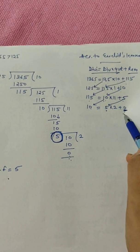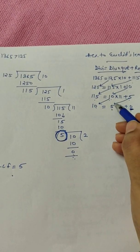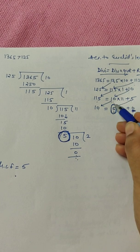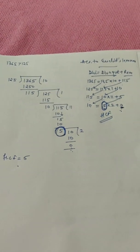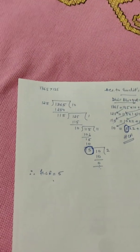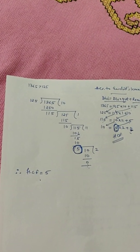So in the step where the remainder comes out to be zero, in that step, whatever is a divisor is your HCF, highest common factor, of the numbers we have taken before, 1365 and 125.